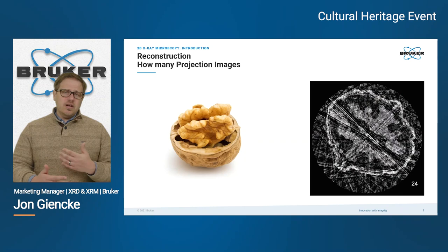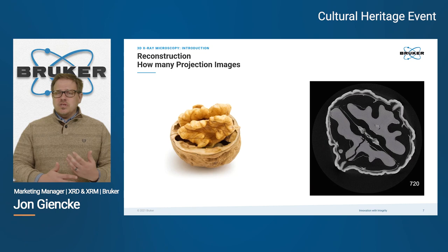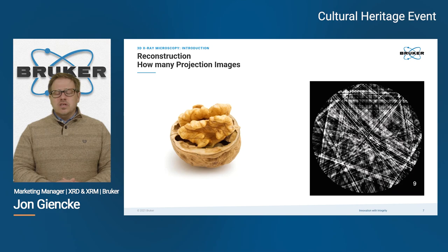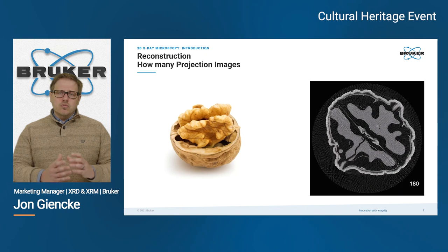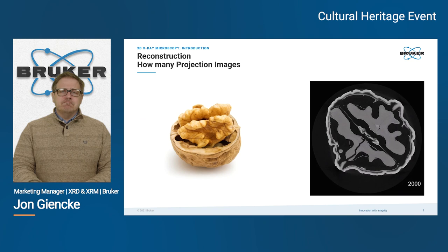The number of projection images you collect directly correlates to the quality of the resulting model. As you can see, with few images everything is very blurry. But as we get into the hundreds and then thousands of projection images, the reconstruction algorithm can fully recreate the specimen — in this case a walnut.